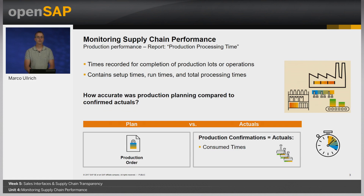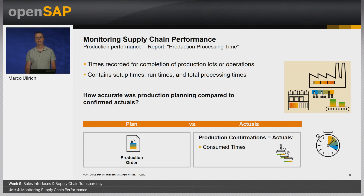After finishing a production lot, which was planned with available master data information we saw in Unit 2 of this week, one question might come up: how accurate was this production planning compared to the confirmed actuals in regards of times? An answer to this can be provided with the report Production Processing Time, as it lists the times recorded for completion of production lots or operations. It contains data such as setup times, run times, and total processing times.